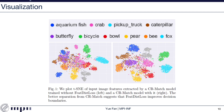Lastly, I show a t-SNE plot of features extracted by CRMatch and CRMatch without feature distance loss. CRMatch with feature distance loss produces better separation between classes. For example, CRMatch forms two clear clusters for caterpillar and butterfly, while CRMatch without feature distance loss mostly mixes them up. Another example: the overlap between crab, bowl, and pear is much less for CRMatch compared to CRMatch without feature distance loss.